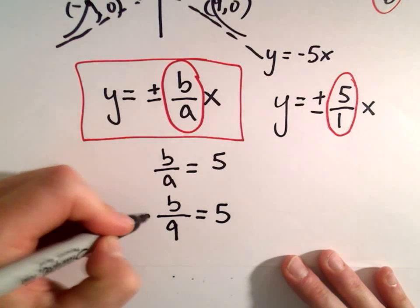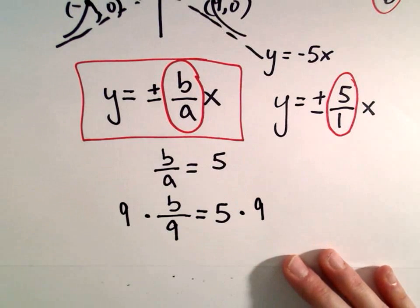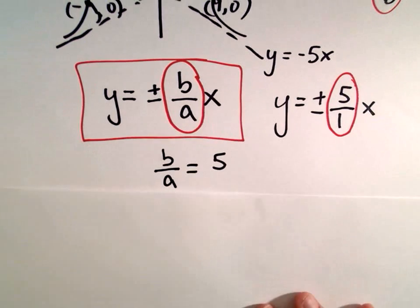So we'll get b over 9 equals 5. Well, if we multiply both sides by 9, that's simply going to leave us with b equals 45.